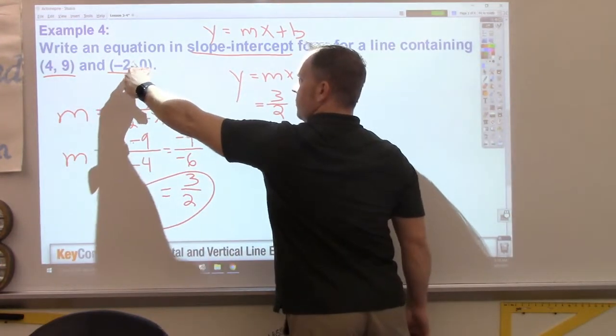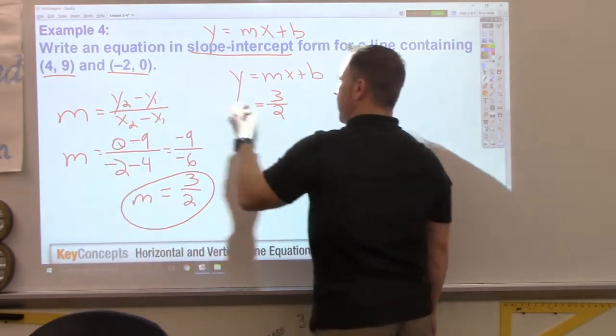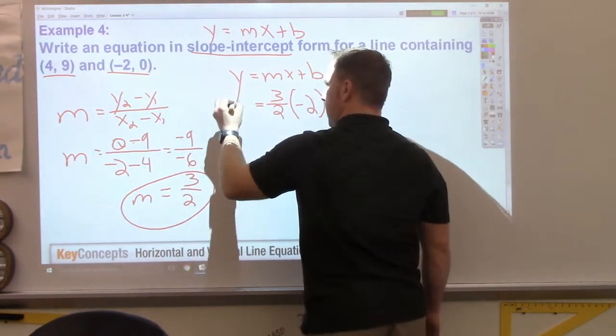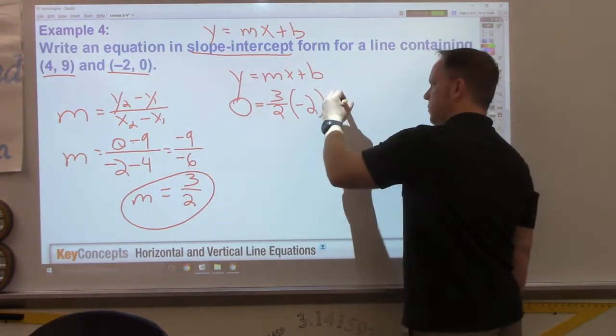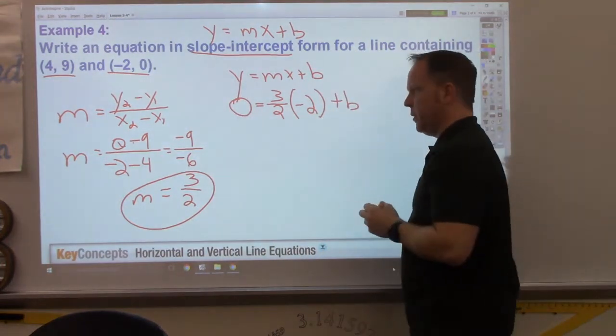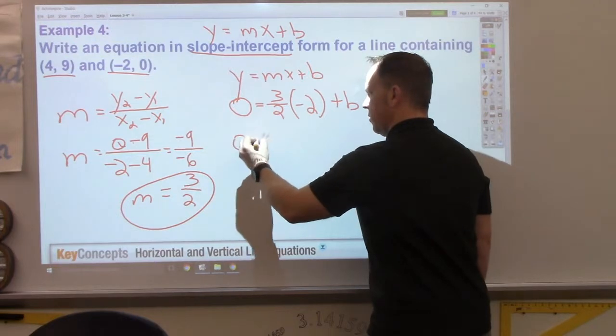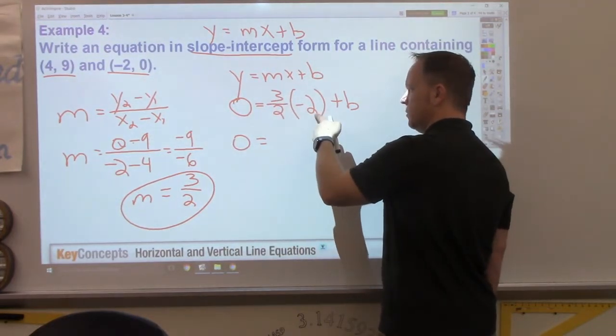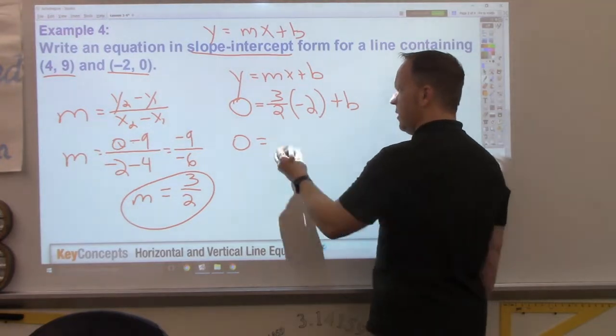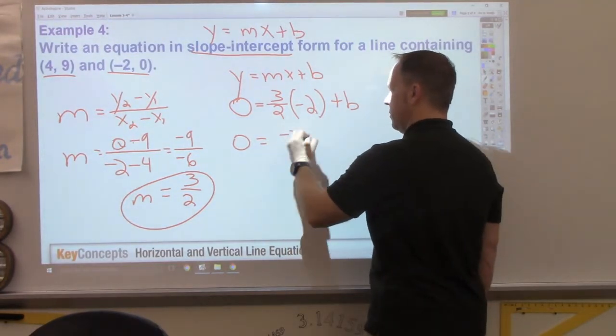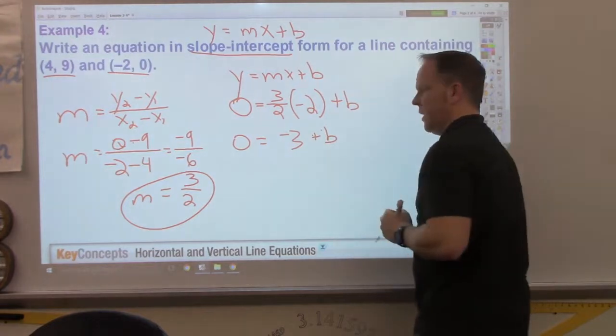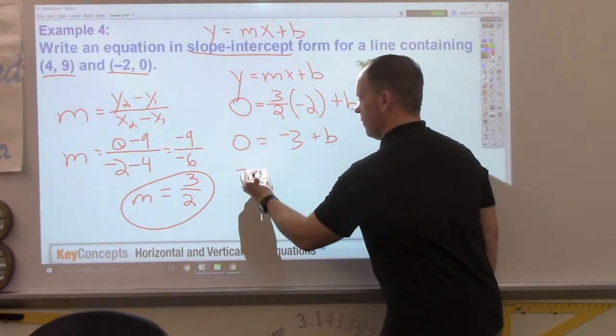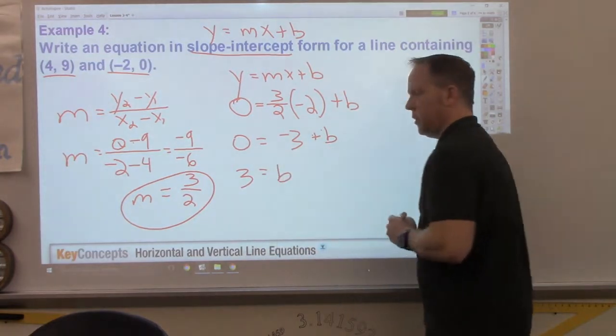So, negative 2 is 0. Negative 2 is x. 0 is y. Plus b. Solve for b. 0 equals... What is negative 3 over 2 times negative 2? The 2's cancel and you end up with negative 3 plus b. Continuing to solve for b. B equals 3.